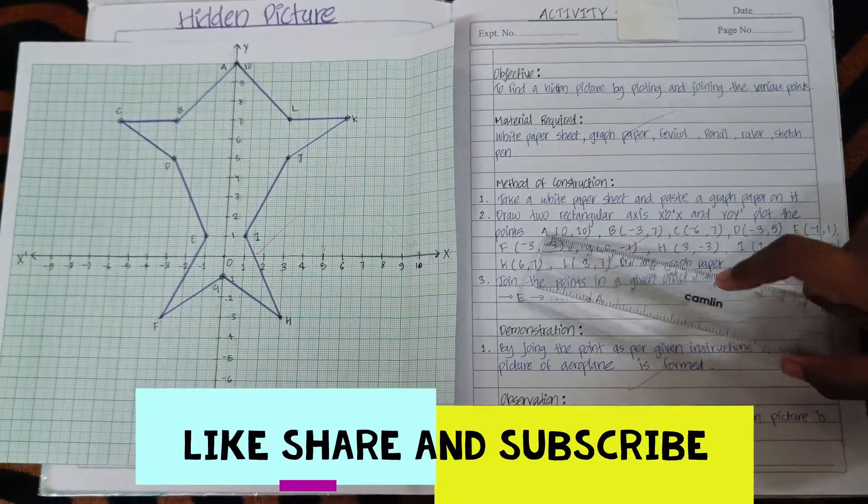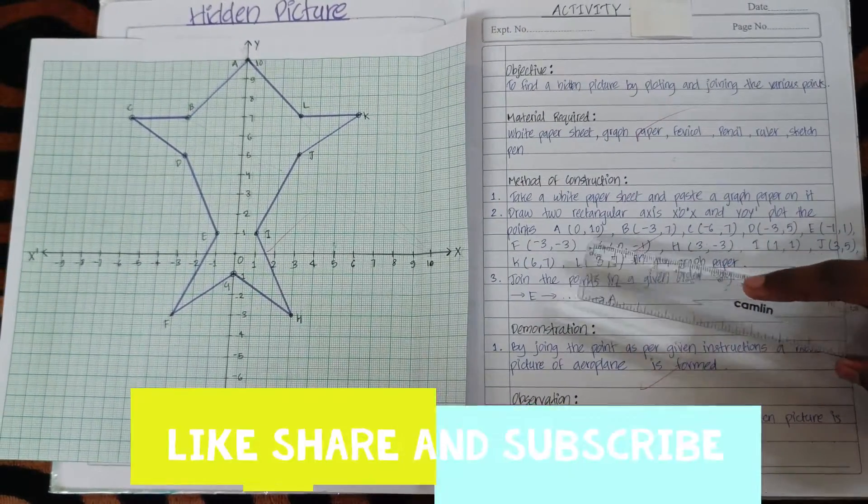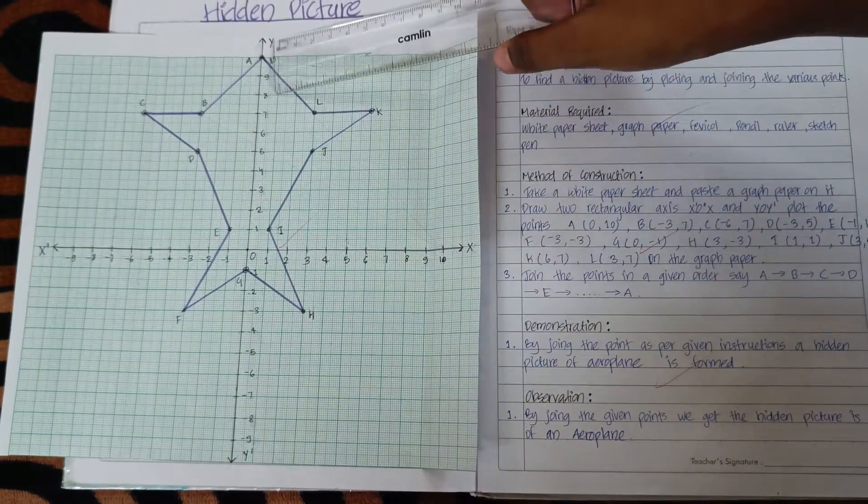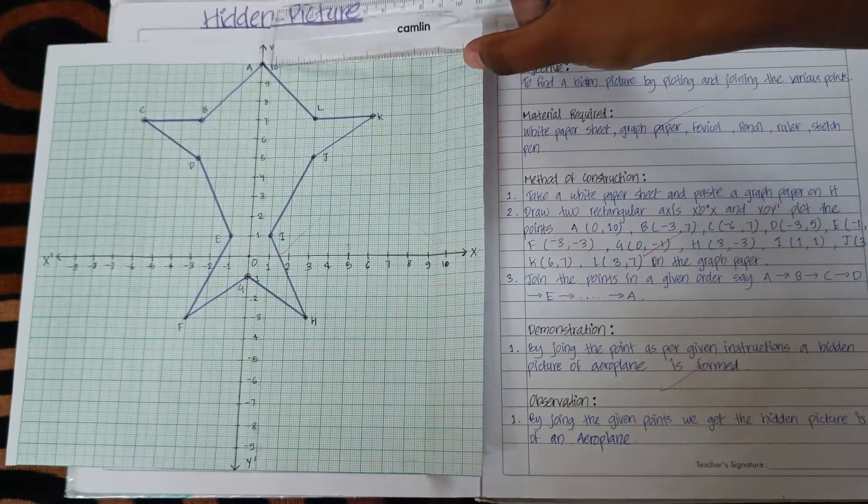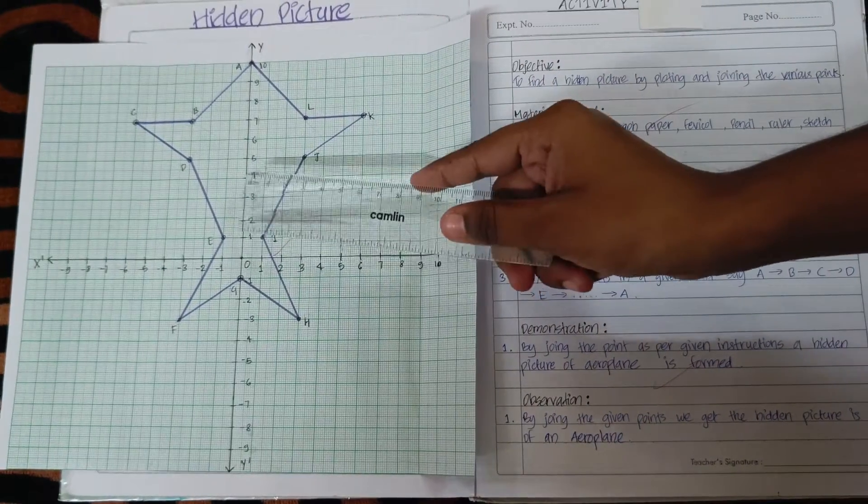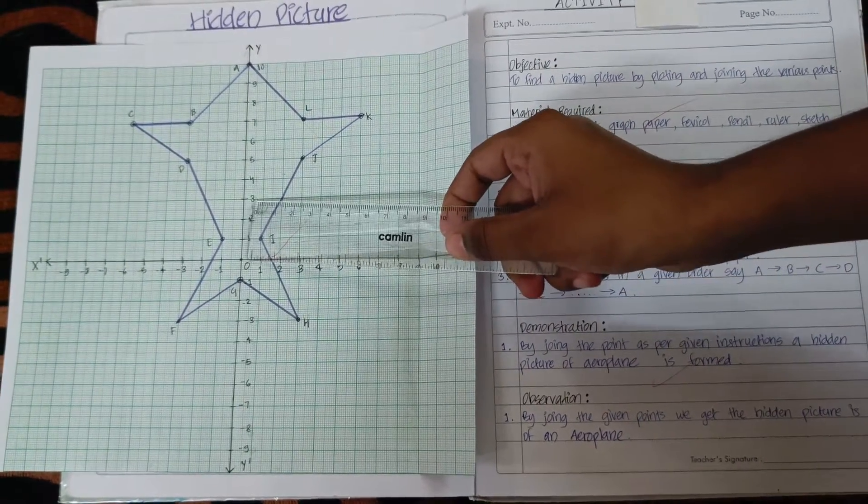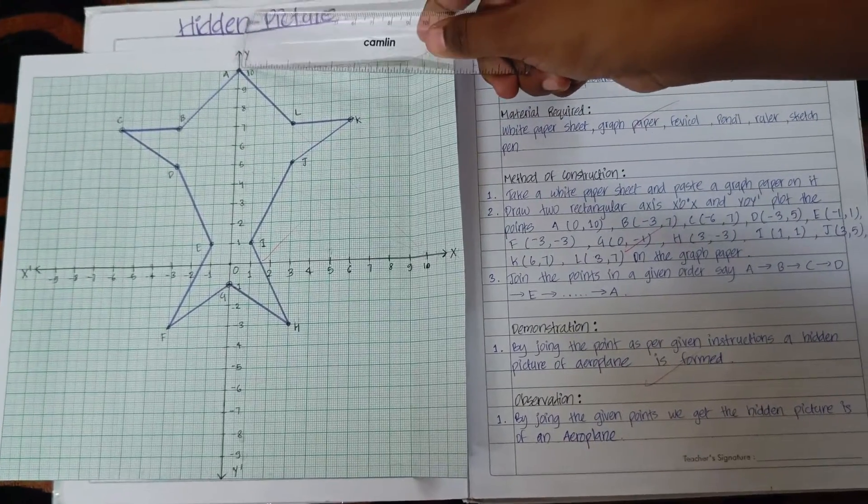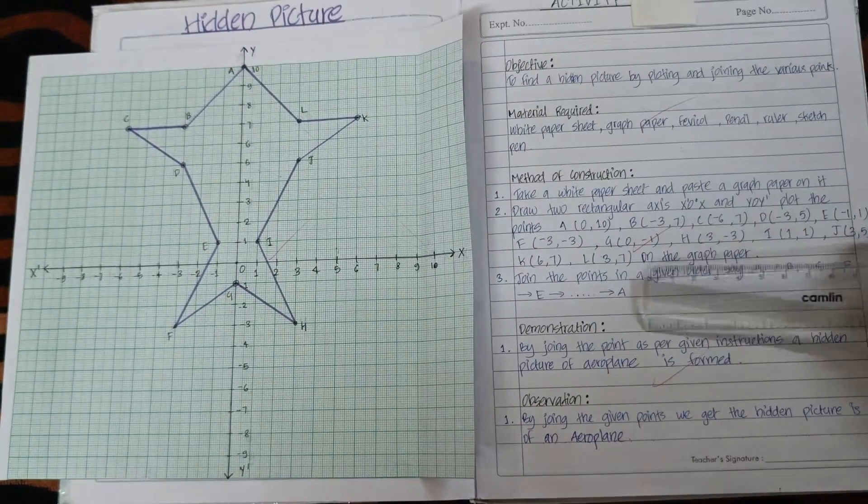First of all, we have point A which has (0,10) coordinates which will lie on the y-axis as abscissa is 0. So in the positive direction on y-axis from the origin, here we have the point A which is (0,10).